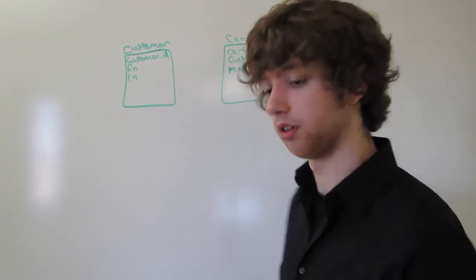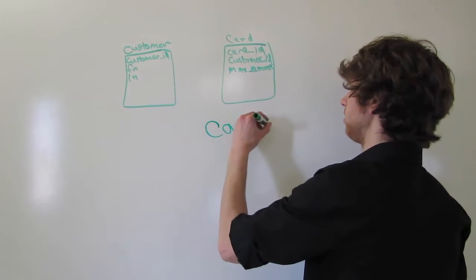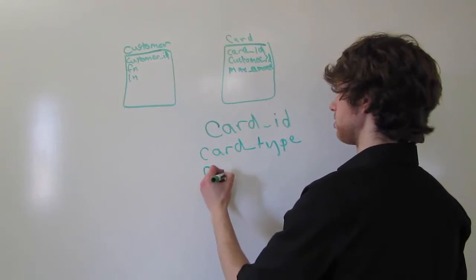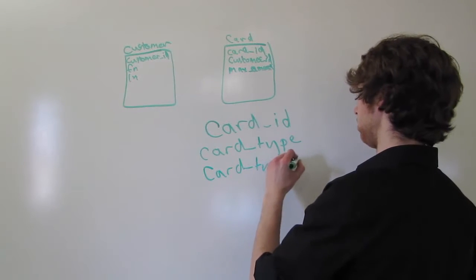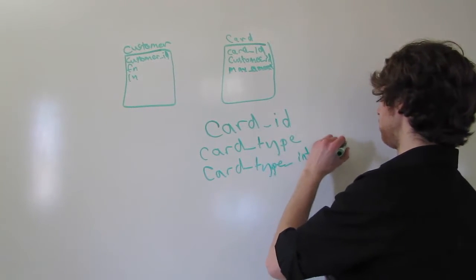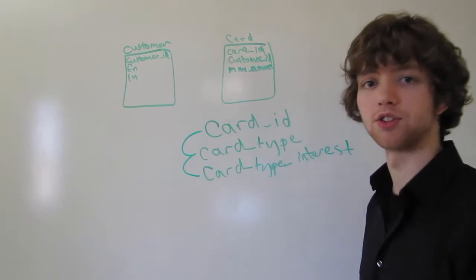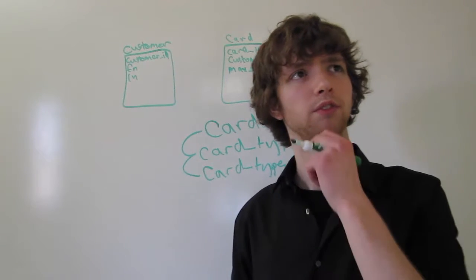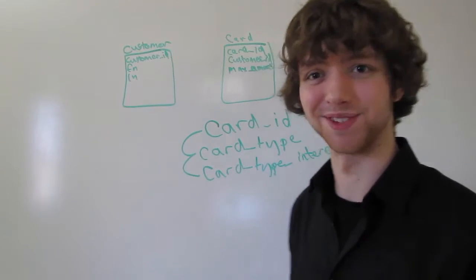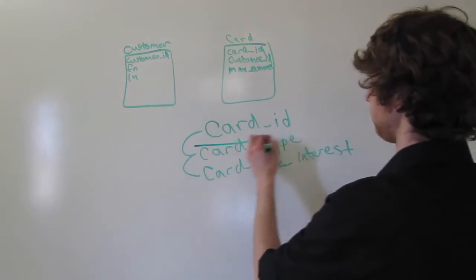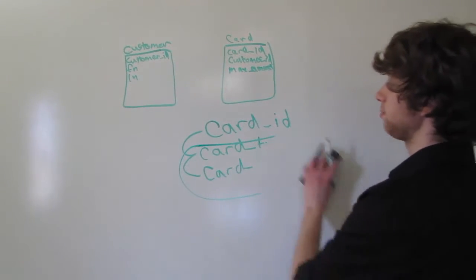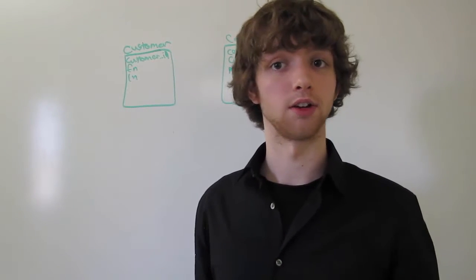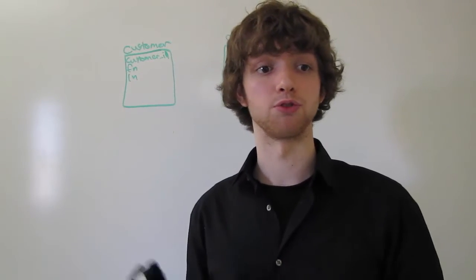If you have card ID, card type, and then something about that card type — like card type interest — that's a transitive dependency, which is a violation of third normal form. That's not good, so you'd want to take those and put them in a new table. A lookup table is a defense against problems like that. It also reduces integrity problems and can reduce repeating values.